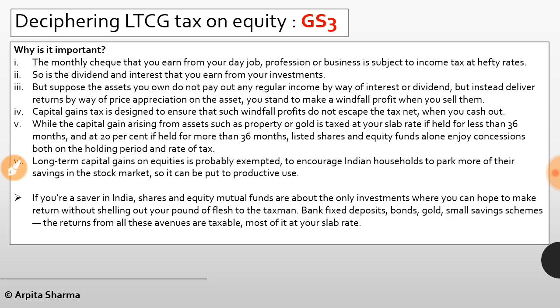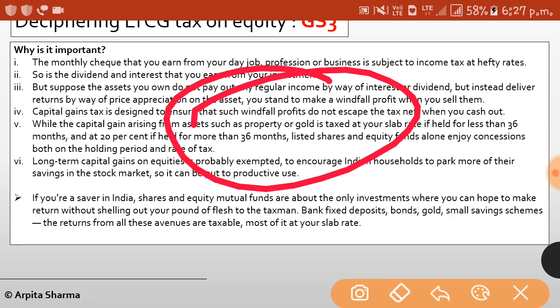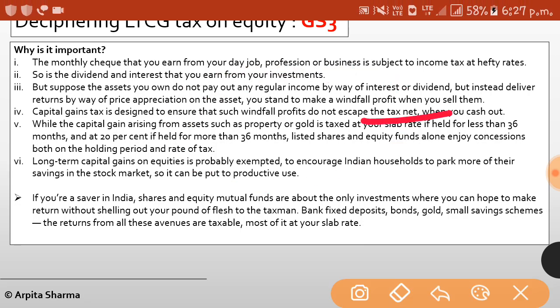But suppose an asset you own does not pay out any regular income by way of interest or dividend, but instead delivers returns by way of price appreciation. You stand to make a windfall profit when you sell. Capital gains tax is designed to ensure that such windfall profits do not escape the tax net.